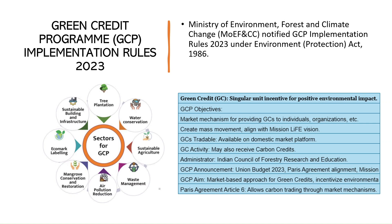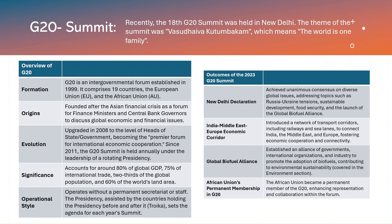The Ministry of Environment, Forest and Climate Change notified the Green Credit Programme Implementation Rules 2023 under the Environment Protection Act of 1986. This is aligned with Article 6 of the Paris Agreement to allow carbon trading through market mechanisms and with Mission LiFE launched by the Prime Minister.